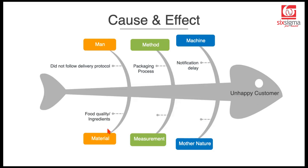It could also be a material issue, which is the food quality — the taste, the ingredients. If there is any inconsistency here, and if the customer has been routinely ordering food from the same restaurant, the customer would be able to identify that, and it would lead to a poor rating.